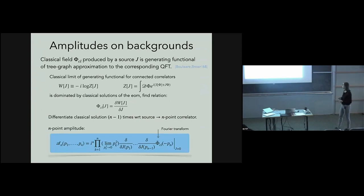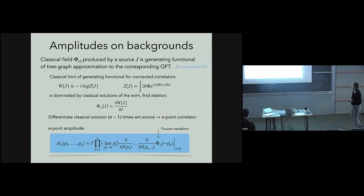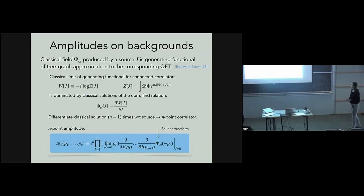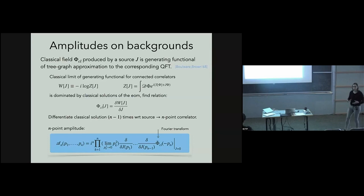Starting from old results by Boulware and Brown from the late 1960s: the classical field produced by a source is the generating functional for the tree-graph approximation of the corresponding quantum field theory. The classical limit is determined by solutions to the equations of motion, and n-point correlators are obtained by taking n minus one functional derivatives of the classical solution with respect to the source.